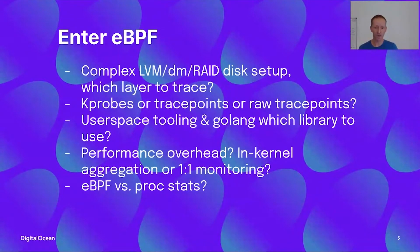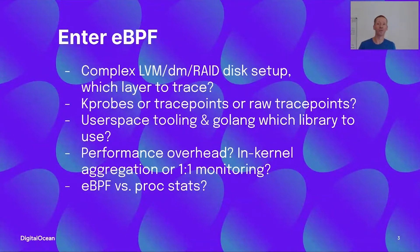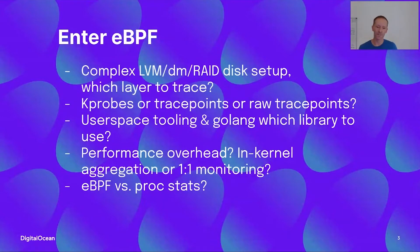We had a number of questions at the beginning. We have a complex disk setup with RAID, DM, and LVM — so which layer should we trace on? Should we trace requests or block IOs? Luckily, there are trace points already in the IO path, but should we use trace points, raw trace points, or rather kprobes? Also, for userspace tooling we are bound to Golang because of our middleware stack, so we needed to decide which library to use. And what is the performance overhead of eBPF?